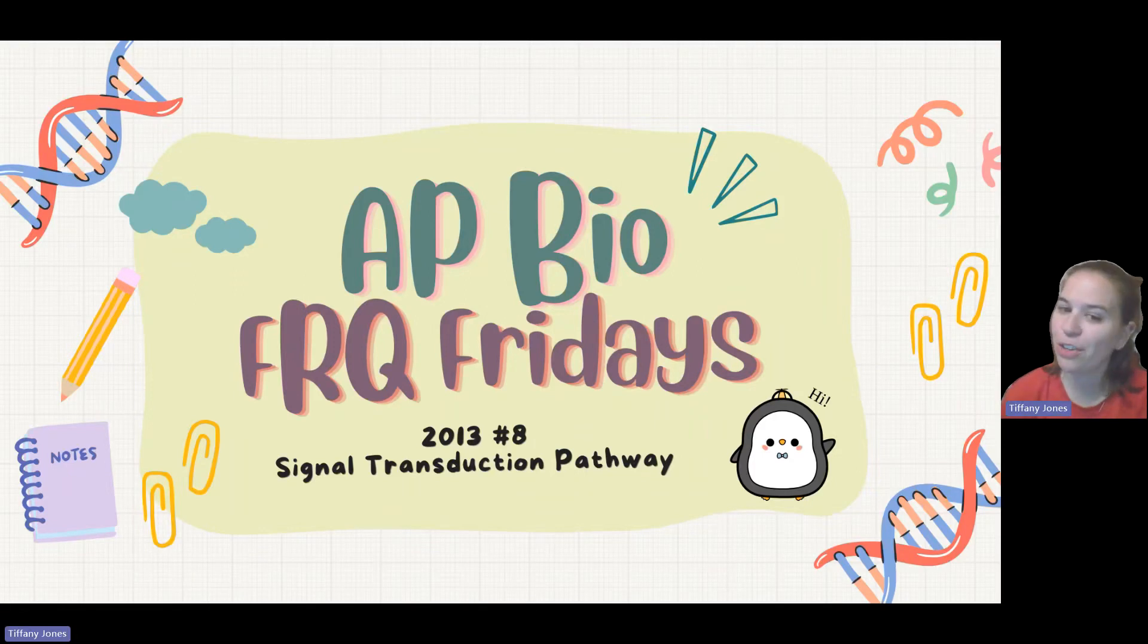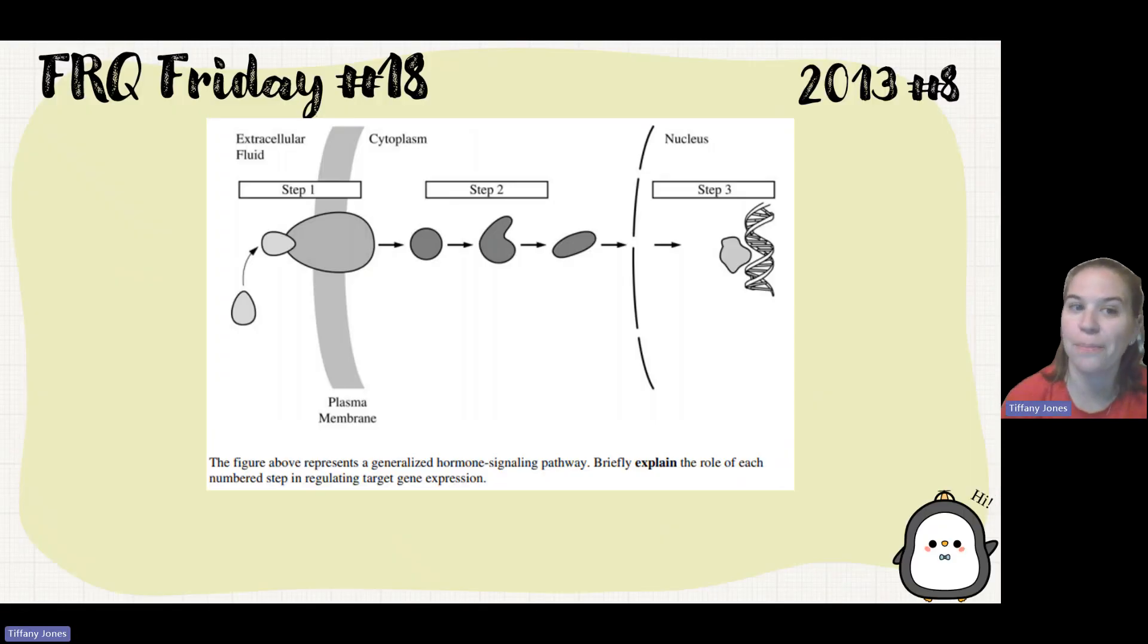What's up about penguins? Today we're doing 2013 number eight on signal transduction pathway. So here we're given this figure and it says the figure above represents the generalized hormone signaling pathway. Briefly explain the role of each numbered step in regulating target gene expression.